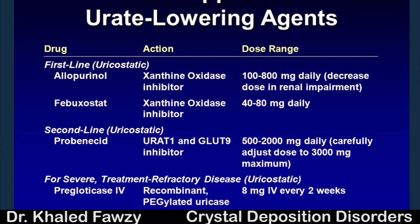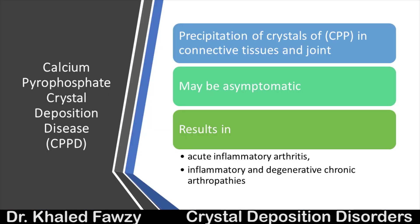Now let's move to calcium pyrophosphate crystal deposition disease. Just as gout is due to deposition of urate crystals, this condition is due to deposition of calcium pyrophosphate in the joints and connective tissues. It could be asymptomatic, or it could result in acute joint inflammation or a chronic inflammatory degenerative arthropathy.